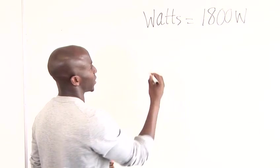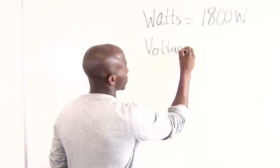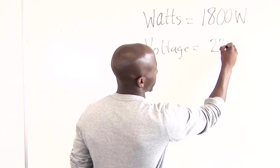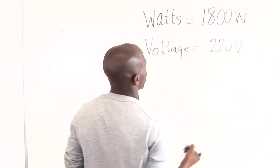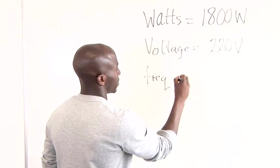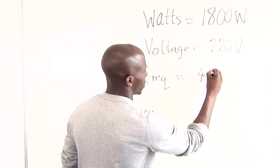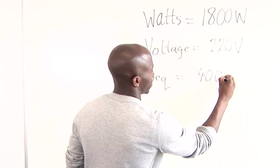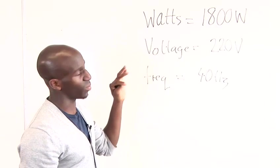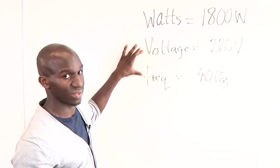You'll have a voltage reading equal to say something like 220 volts, and then you'll have a frequency reading equal to say something like 40 hertz. When you are calculating kilowatt hours, it's important to also know that these two are relevant.